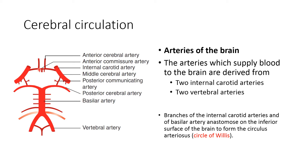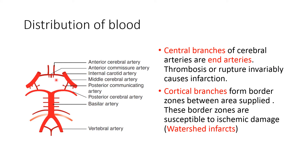The Circle of Willis gives rise to six large arteries: the anterior cerebral artery, the middle cerebral artery, and the posterior cerebral artery. The basilar artery also provides blood supply to the pons, medulla, and occipital lobes. The internal carotid artery also provides blood supply to the brainstem and parts of the cerebral hemisphere.